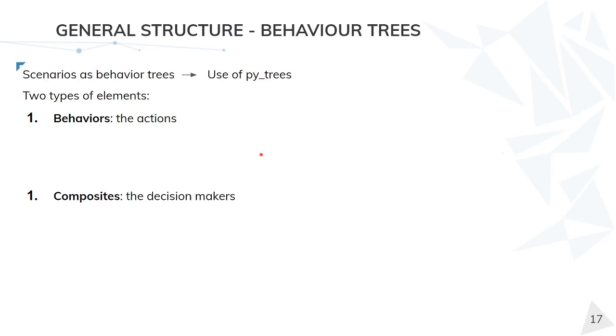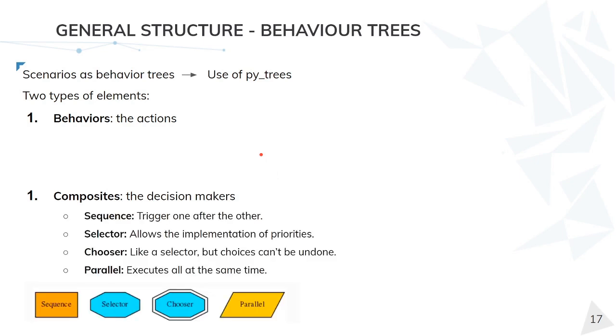Let's start by the second group. These are already implemented in PyTrees and have four types: sequence, selector, chooser and parallel. Just to put an example, sequence handles the triggering of different behaviors in a sequence, one after another.